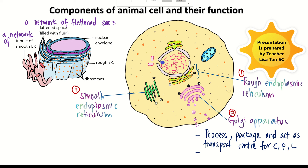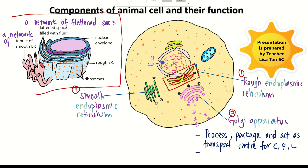Number one, we are going to study about the structure of rough ER, rough endoplasmic reticulum. Rough endoplasmic reticulum is continued from the outer membrane of the nucleus. This is a two-dimensional view of rough ER, and this is a three-dimensional view of rough ER. The word 'reticulum' means a network. Rough endoplasmic reticulum is a network of flattened sacs.